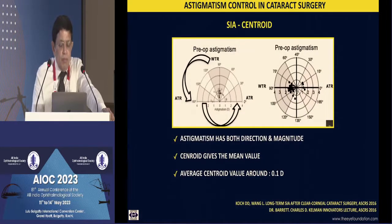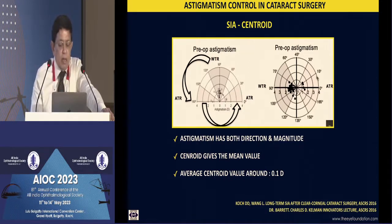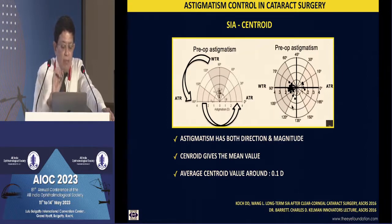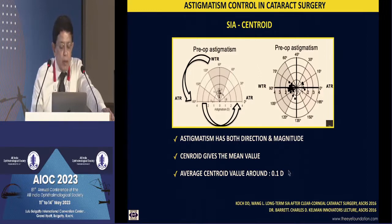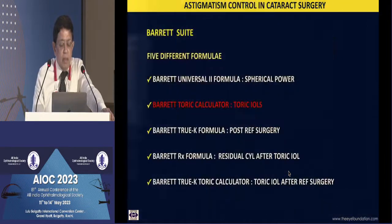We already alluded to this: the surgically induced astigmatism has both a magnitude and a direction, and when you plot these they tend to neutralize. The average centroid value for a 2.4 mm or sub-2.4 mm incision is just about 0.1 diopter, which you can essentially ignore. Irrespective of corneal steepness, we go ahead and do a temporal clear corneal incision.